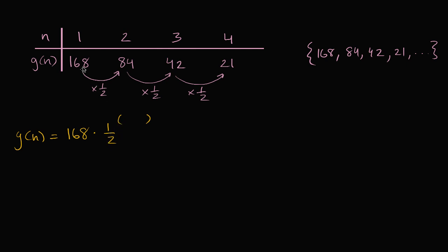And how many times are we gonna multiply by 1 half? The first term, we multiply by 1 half zero times. The second term, we multiply by 1 half one time. Third term, we multiply by 1 half two times. Fourth term, we multiply by 1 half three times. So it seems like whatever term we're on, we're multiplying by 1 half that term minus one times.